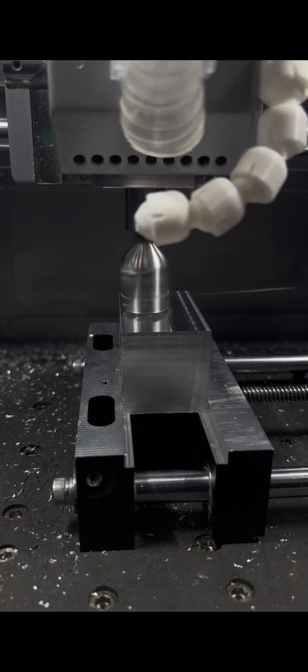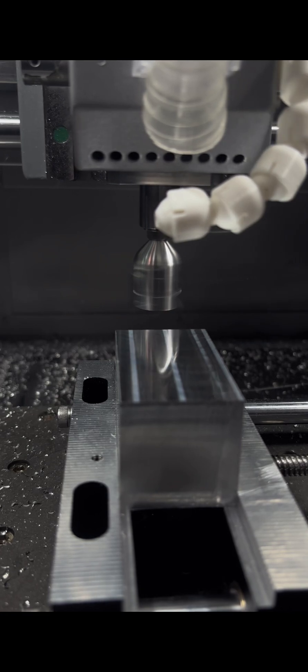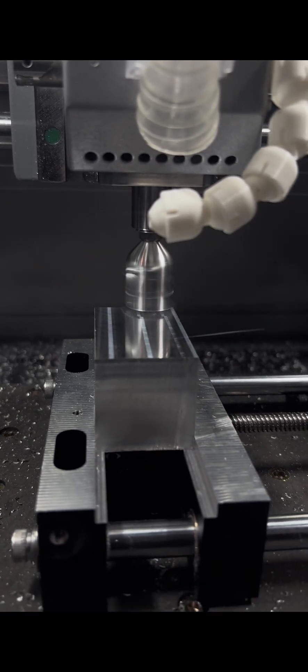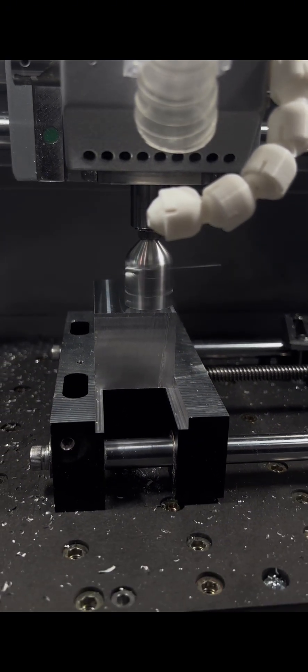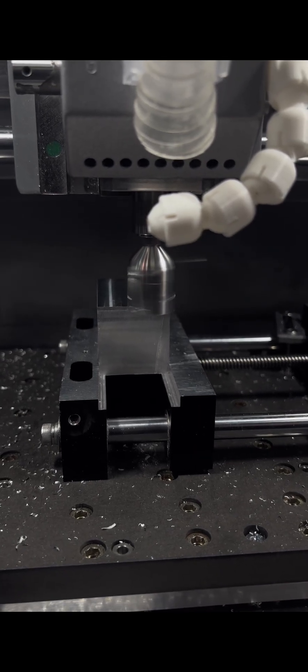But it was introducing a lot of chatter, so I bumped up the spindle speed to 12,000 RPMs while bumping up the feed rate to a thousand and the step down I made it a 0.1 instead of 0.5 millimeters.